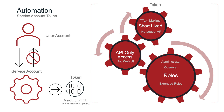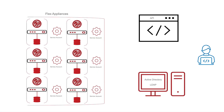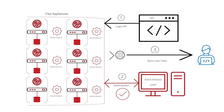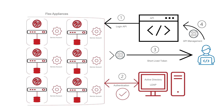The service account lends itself well for customers managing multiple appliances where user credentials are controlled by an external authority such as Active Directory or LDAP. A typical workflow starts with a user login. Next, the appliance forwards user credentials to AD or LDAP for authentication. If authentication is successful, the appliance issues a service token with the requested time to live, which can then be used for management and monitoring tasks.